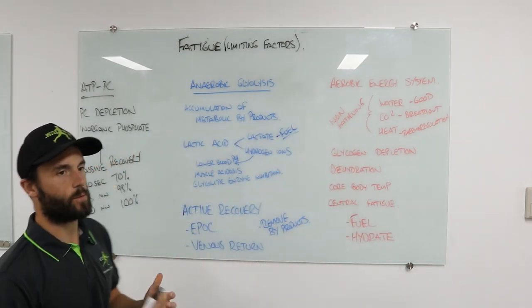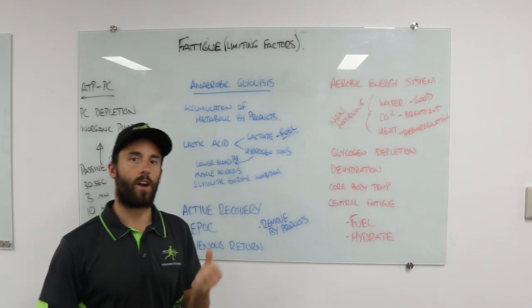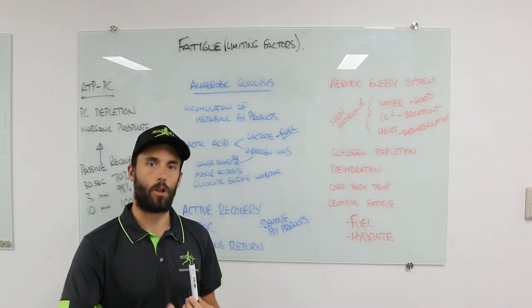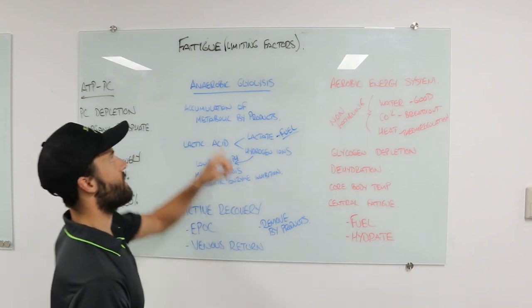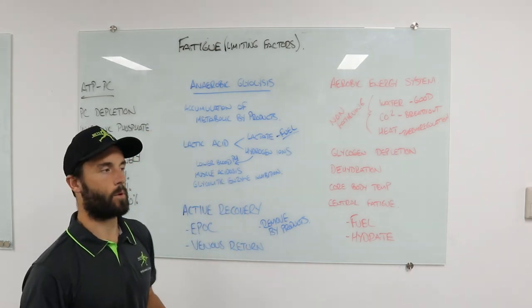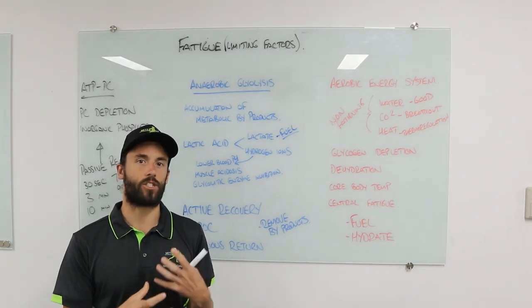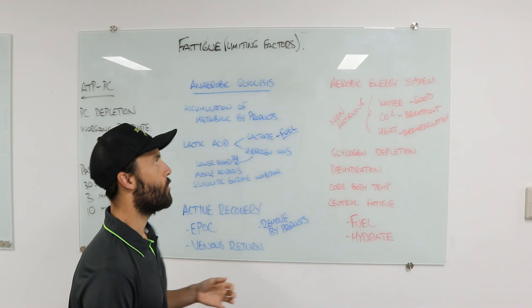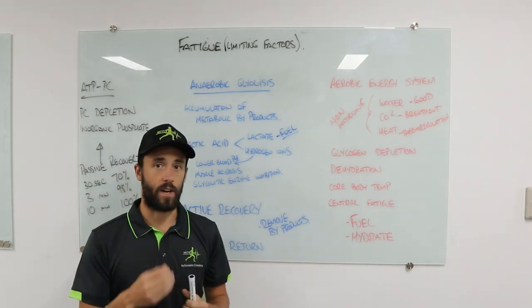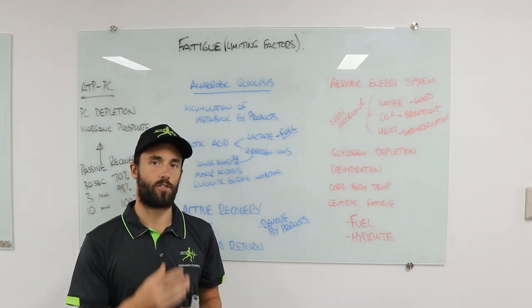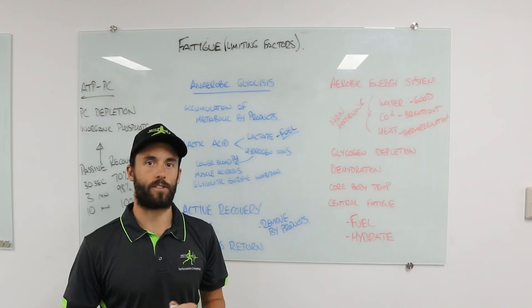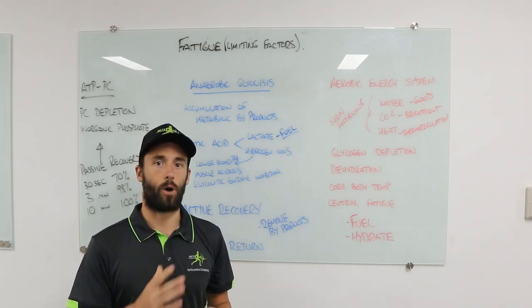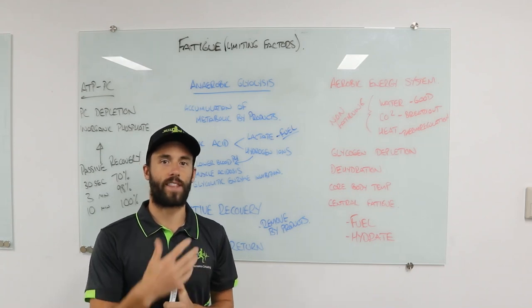As we go a bit longer — say a 400m sprint, a one-minute max effort, or team sports with lots of explosive efforts — we're looking at the anaerobic glycolysis system. Anaerobic glycolysis means we're breaking down glycogen as a fuel without oxygen present, and when we do that we have an accumulation of metabolic byproducts. The cause of fatigue from the anaerobic glycolysis system: an accumulation of metabolic byproducts.